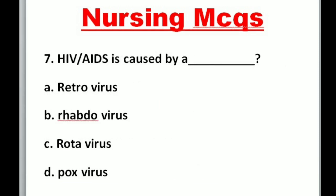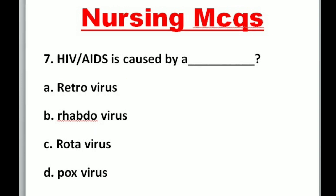Question 7: HIV/AIDS is caused by — A. Retrovirus, B. Rhabdovirus, C. Coronavirus, D. Pox virus. Correct option is A: Retrovirus.